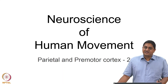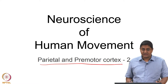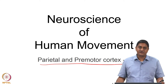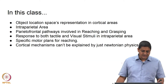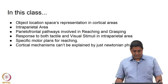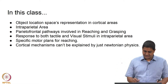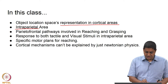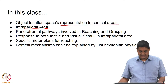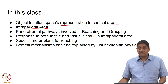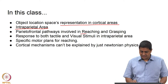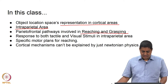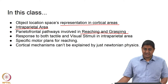Welcome to this class on Neuroscience of Human Movement. In this class we will discuss Parietal and Premotor Cortex. This is part 2 of our discussion, so today we will be talking about how object location in space is represented in cortical areas, and the crucial role of the intraparietal area and the parietal-frontal pathways involved in reaching and grasping, and how different sets of neurons respond to different types of stimuli.